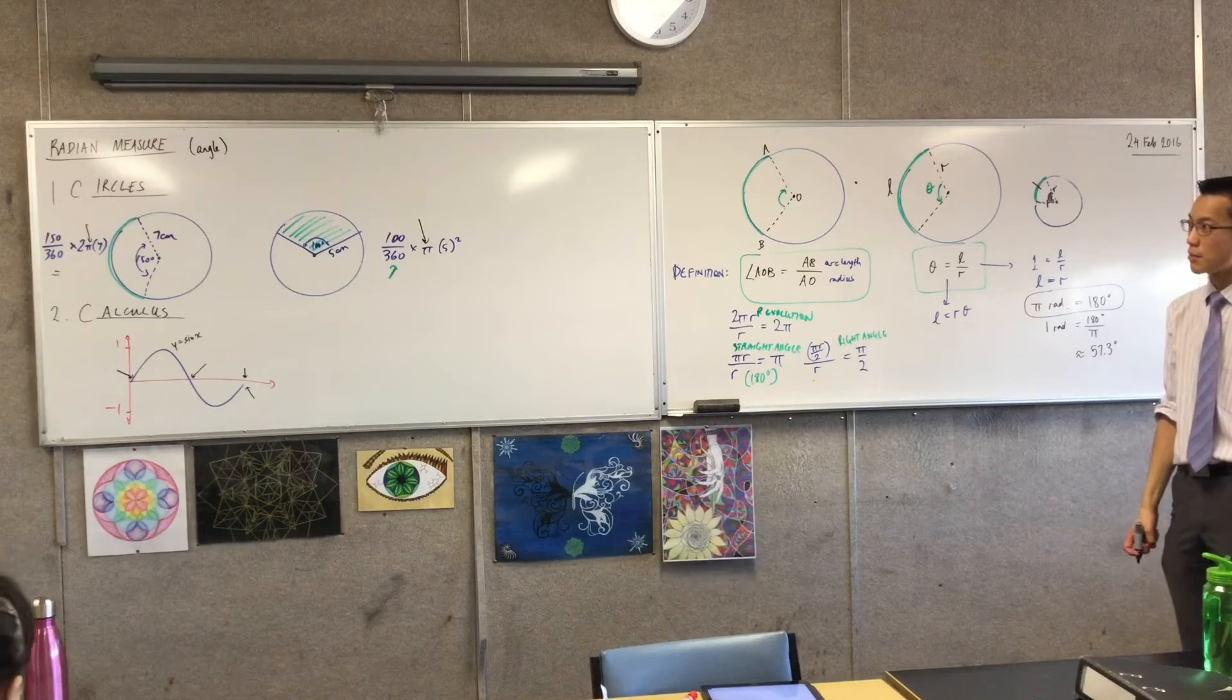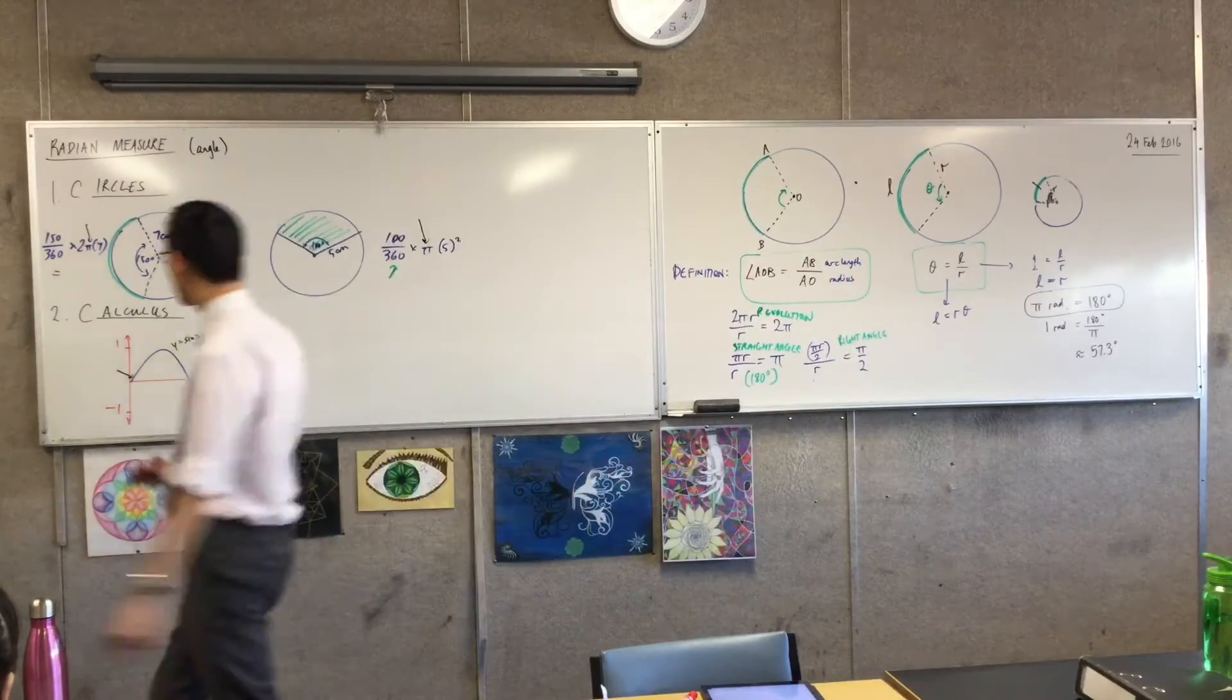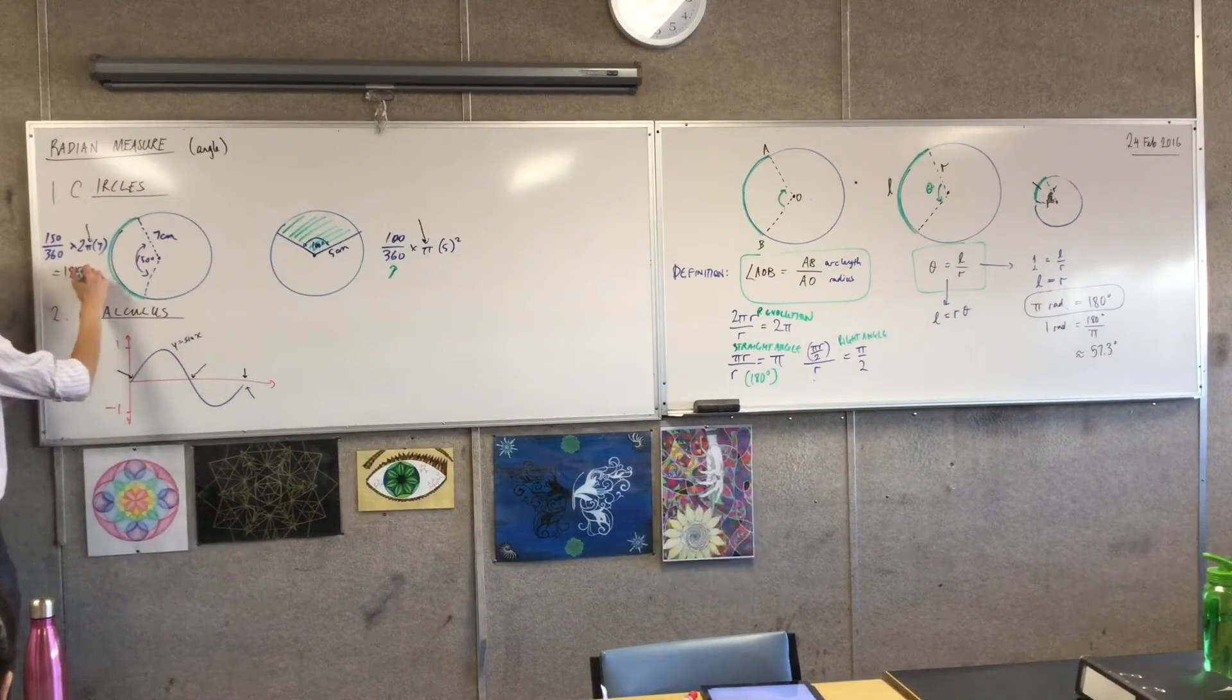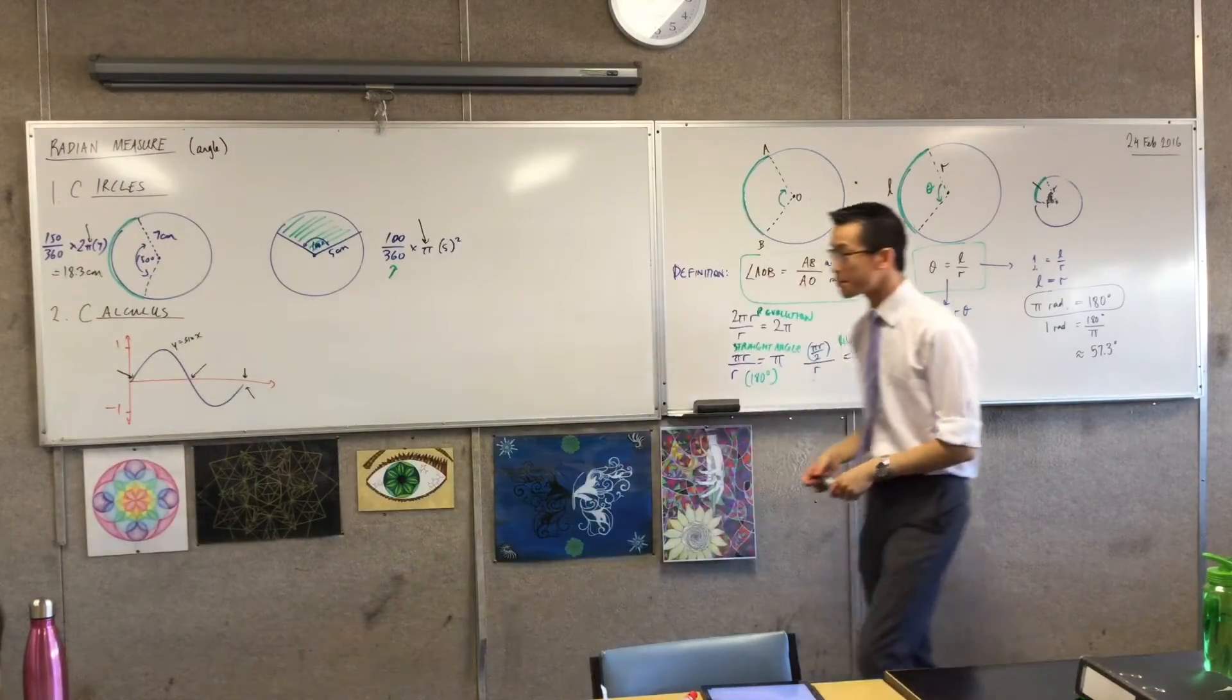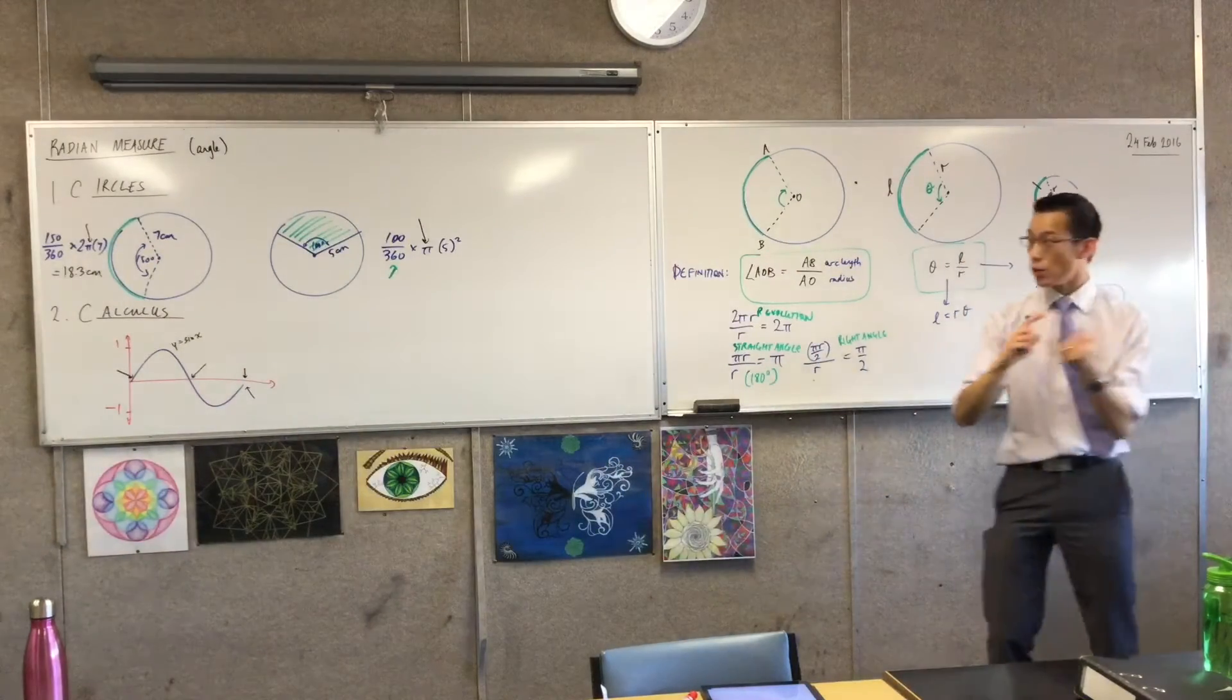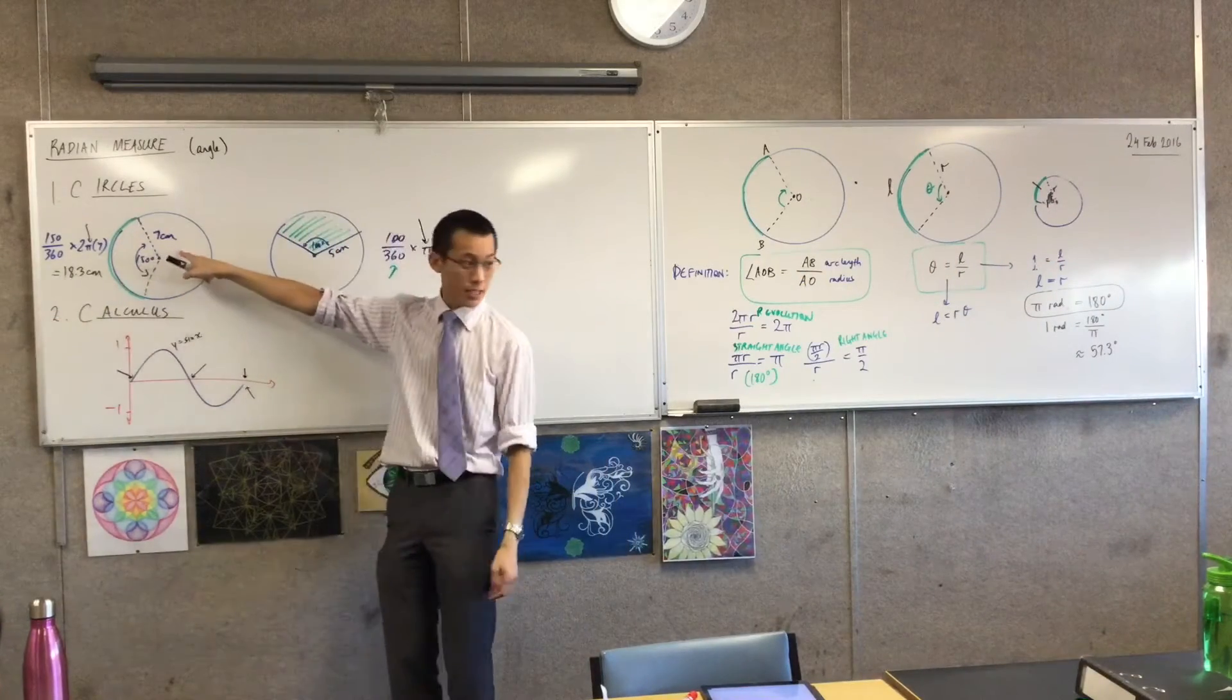Just estimating, I'm guessing it's something like, yeah, no, 18.3? Okay, now, the reason why I draw this out now is because I know what the arc length is now, 18.3 cm, and I know what the radius is, 7 cm.